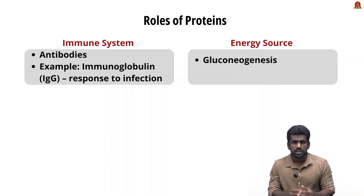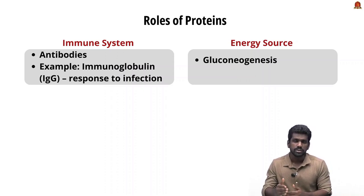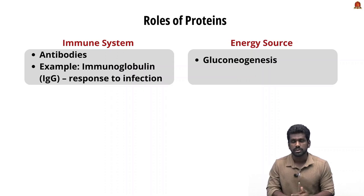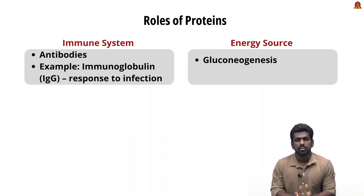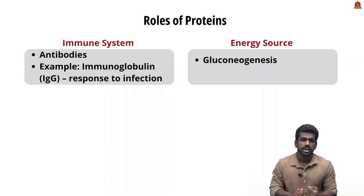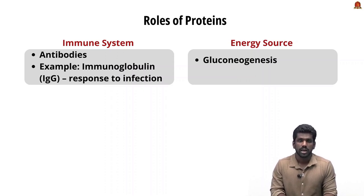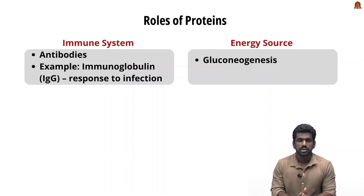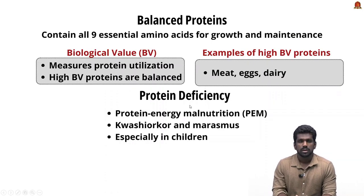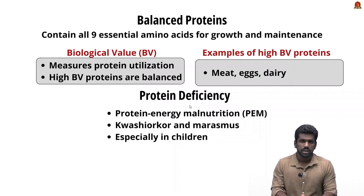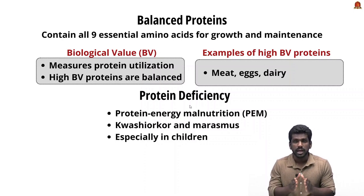When there is not enough carbohydrates and fats for energy, the body utilizes proteins from muscle tissues. To summarize, proteins act as enzymes, hormones, transport molecules, immune defenders, and energy sources. These are the important roles of protein in the human body.